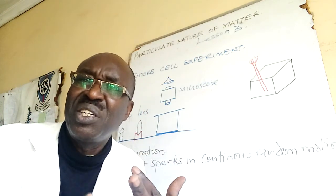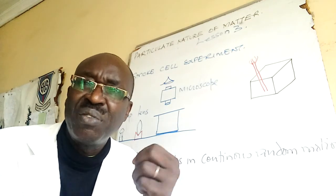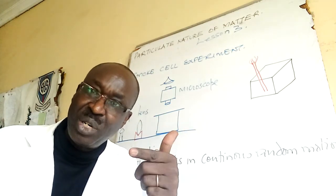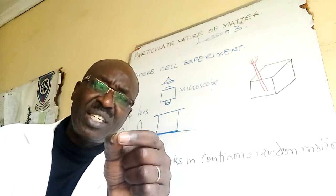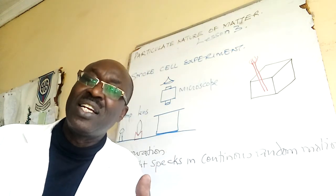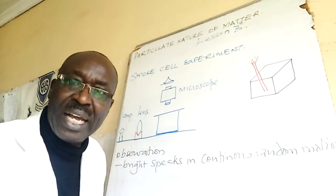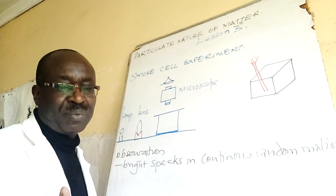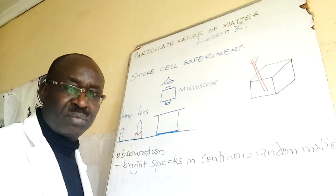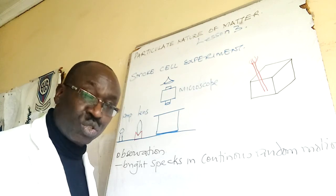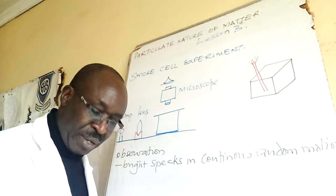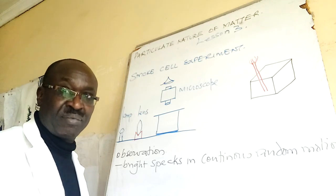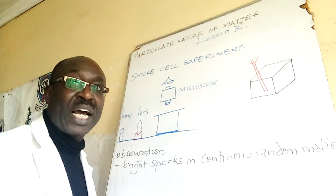So that small compartment is what we call our cell. This one is not police cell, is smoke cell to contain smoke inside. The bottom line is it is small. We need a microscope, a very strong one. We need a lens and we need a source of light because when you are using microscope you need good light.